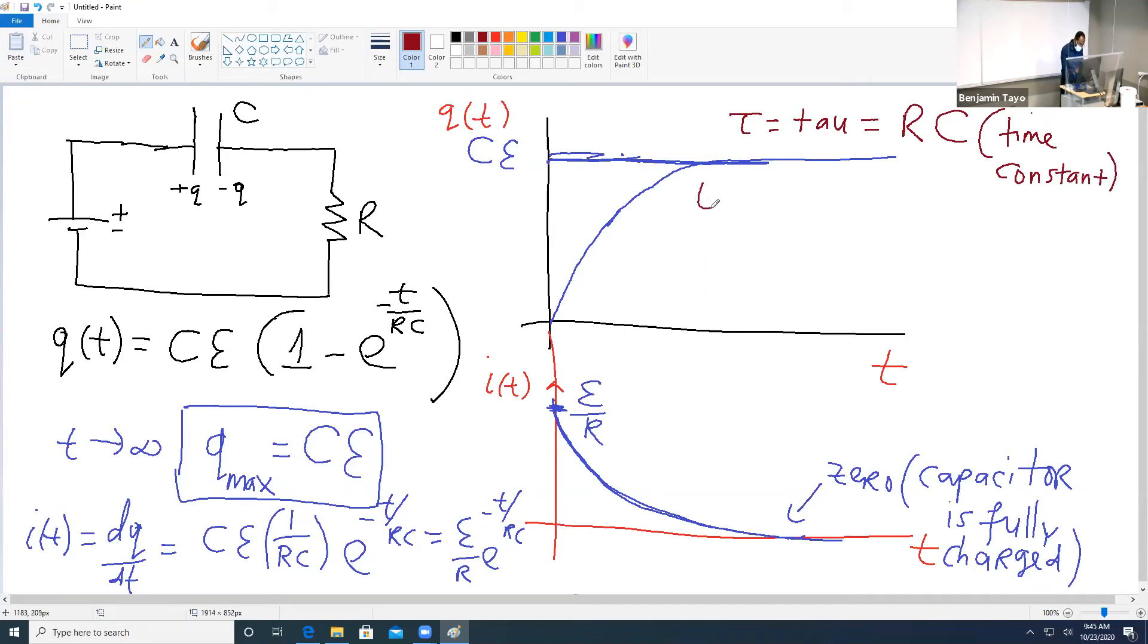Now this is called the time constant because whenever t equals R times C, then notice that your q(t) is going to be Cε times one minus e to the negative one. And e to the negative one is about 0.3, so all of this is about 0.67. So this time constant is the time that it's going to take for the capacitor to charge up to about 67%. So at t equals tau, the charge on the capacitor is about 67% of the maximum value.